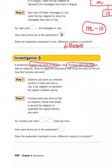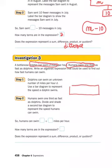Remember, when we're doing an expression, we start with what we don't know. And we don't know how fast dolphins can swim — d. So just like in Investigations 1 or 2, I start with a bar and my variable. Remember, d is how fast dolphins can swim. Now, here's what we do know: humans swim one-third as fast as dolphins, so I'm going to split the dolphin speed into thirds — that means three parts.